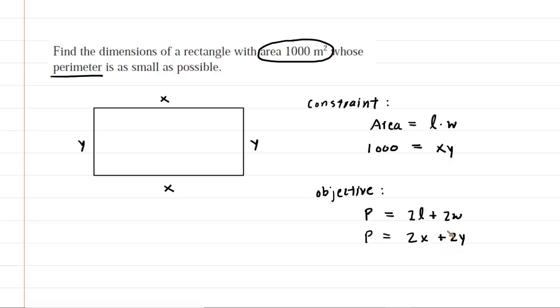Next, we need to solve our constraint for one of the variables. We can solve it either for x or y. Traditionally, we solve for y. So we'll divide both sides of this equation by x. The x's cancel out on the right hand side. And now we can see that y would be equal to 1000 divided by x.